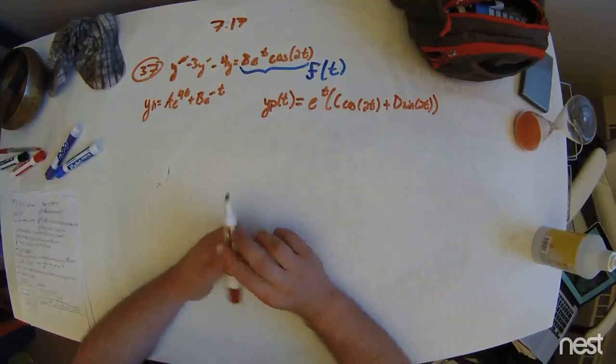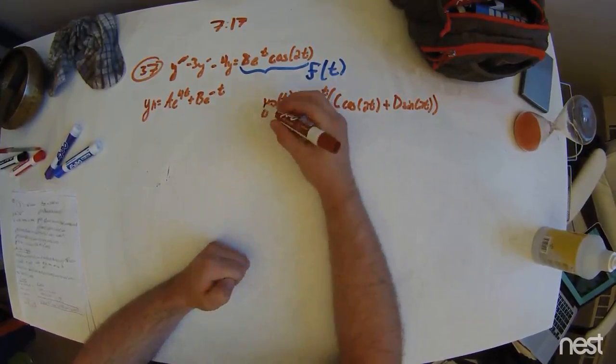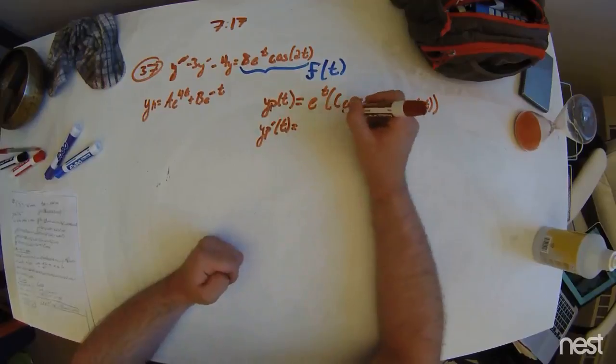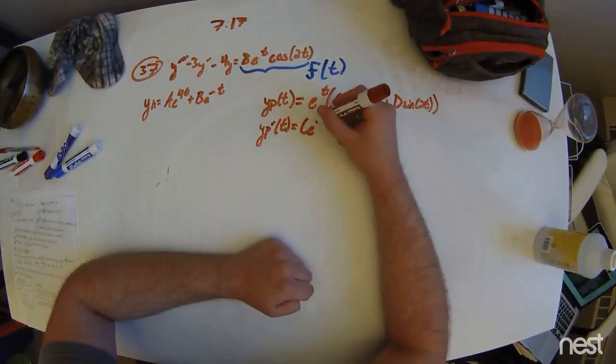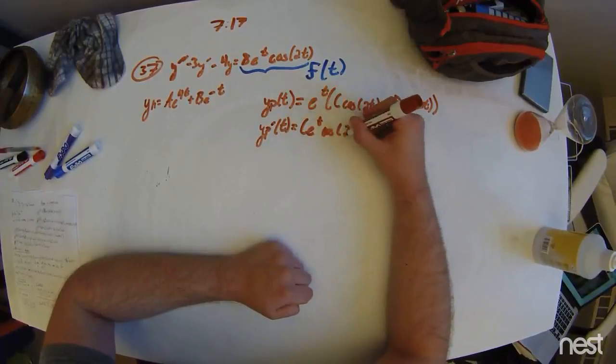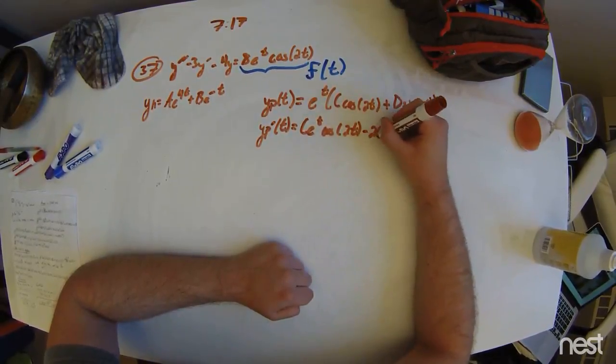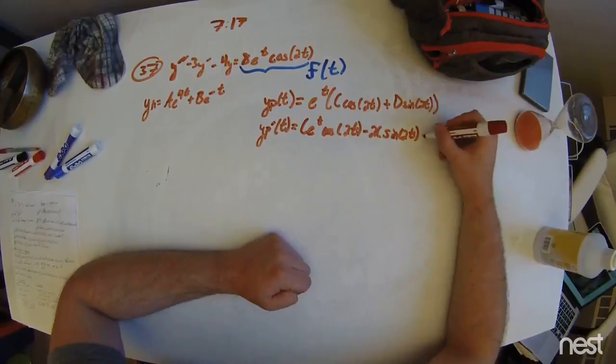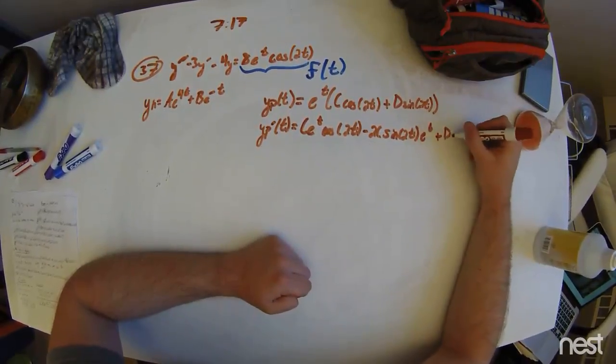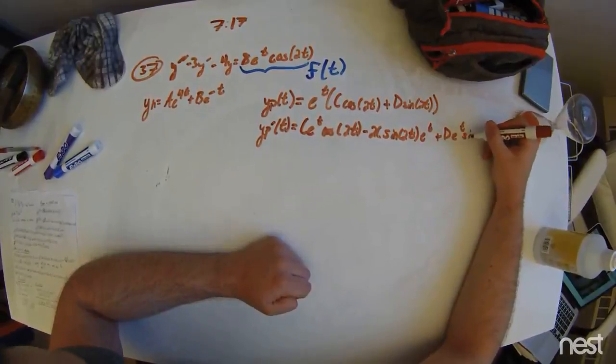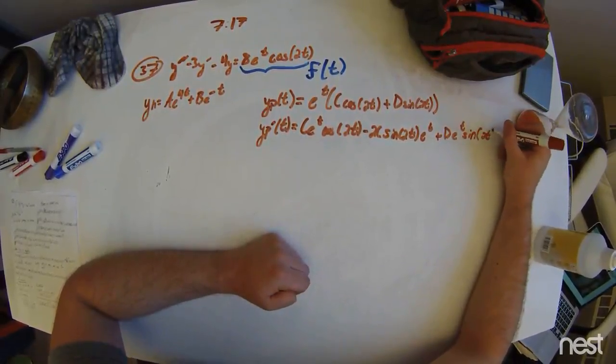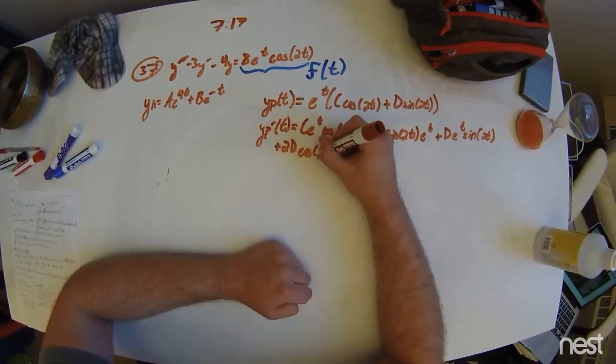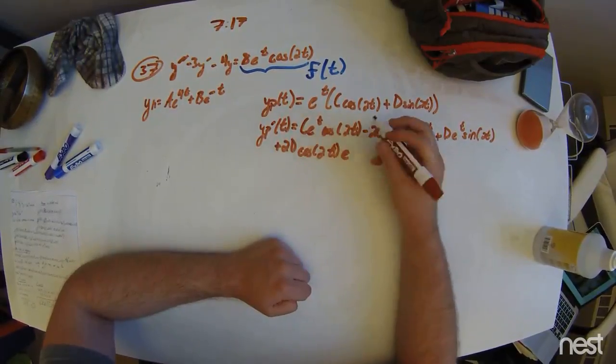The first derivative of this is nasty, the second derivative even more so. However, terms can be grouped together to make your life easier. We get c e to the t times cosine of 2t minus 2c sine of 2t, plus e to the t times d times sine of 2t.